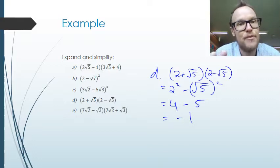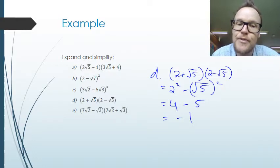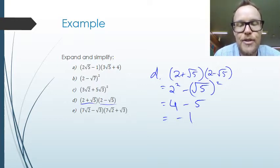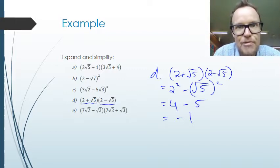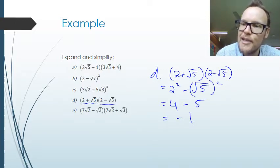The interesting thing about the difference of two squares format — the same number added, times the same number with the second number subtracted — is you will always get a whole number answer with no surds. The reason is that you'll always be squaring your square roots, so there will never be surds in your answer for that type of question.